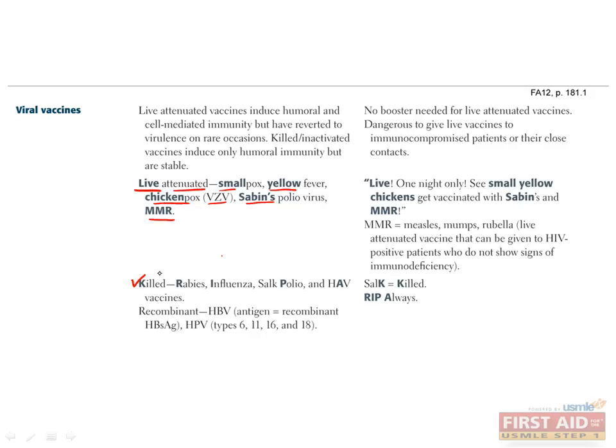Inactivated vaccines contain killed virus with immunogenic stimulants such as the viral capsid or envelope antigens. The immune response is predominantly Th2, thus generating only a humoral antibody response with no strong cell-mediated response. Therefore, the immunity is short-lived and requires boosters to maintain. However, inactivated vaccines are safer, especially for immunocompromised patients. This can create classic board-style questions expecting you to know the difference between inactivated and live vaccines to make appropriate vaccine recommendations for immunocompromised patients. Killed or inactivated viral vaccines include rabies, influenza, the Salk polio, and hepatitis A viral vaccines.